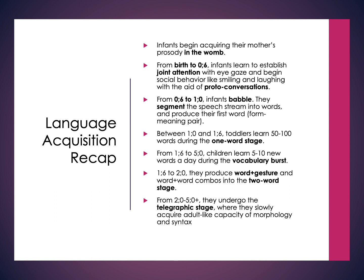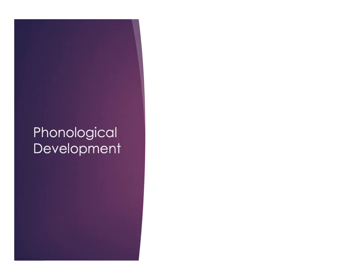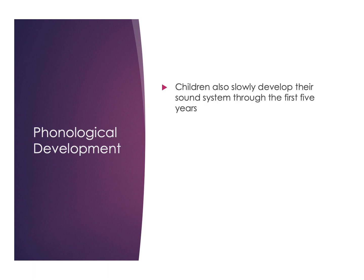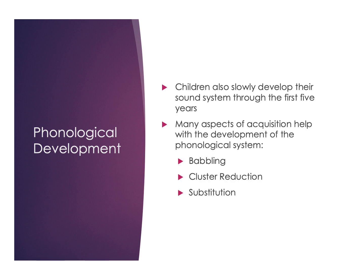Today we'll look at some of the phonological development — some of the sound changes that happen during the same time as these other grammatical stages. When we're looking at phonological development, these are things that are also happening within those first five years, and there are several aspects starting to happen at this time. Babbling, which we've already talked a little bit about, is also a phonological aspect of development. Before things are mastered, we also see some other common processes, things like cluster reduction and substitution of one sound for another.